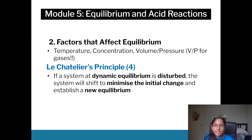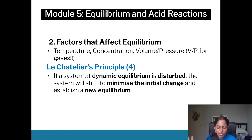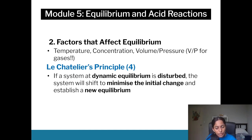Factors that affect equilibrium: the main ones are temperature, concentration, volume, and pressure. Volume and pressure are inversely proportional and only apply to gases — you don't include liquids or solids in an equilibrium constant anyway. Le Chatelier's Principle will always be worth a mark in your questions. My preferred definition is: if a system at dynamic equilibrium is disturbed, the system will shift to minimize the initial change and establish a new equilibrium. That last part — establishing a new equilibrium — is really important, not just the shift.